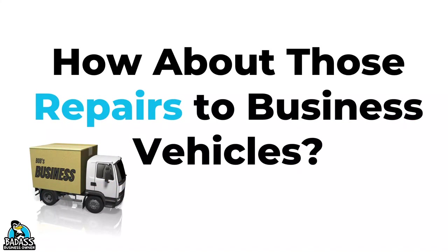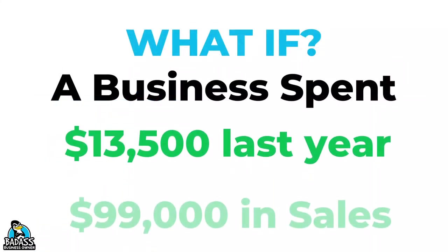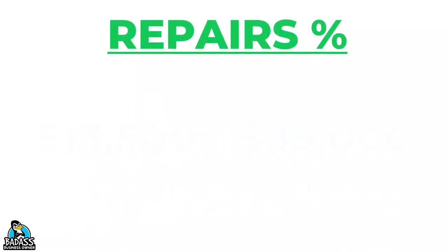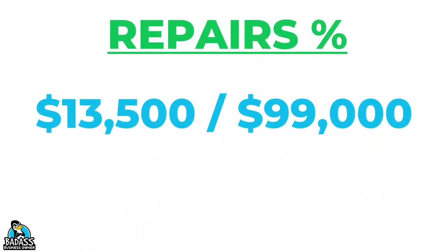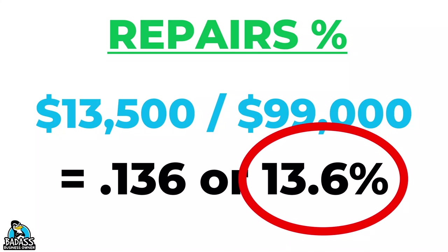One more example. Let's say this year we spent $13,500 on repairs to our equipment and our sales year to date are $99,000. We want to know what percentage of our money has gone towards all these repairs. We take $13,500 and divide it by $99,000 in sales, and we discover that repairs cost us 0.136 — or 13.6% — of every dollar we made. Ouch. It might be time to stop the bleeding and invest in some newer equipment, because the band-aids aren't helping and it's costing us a lot of money.